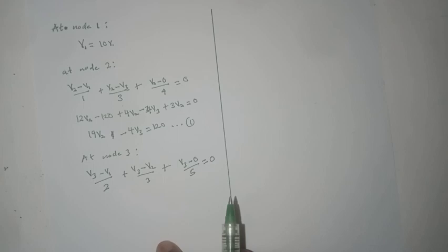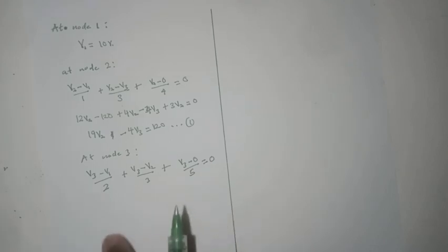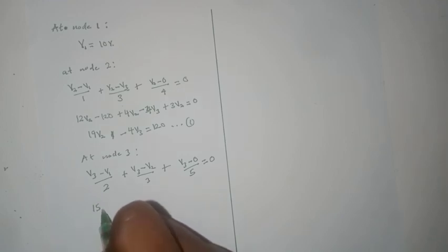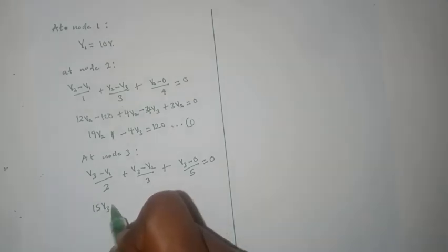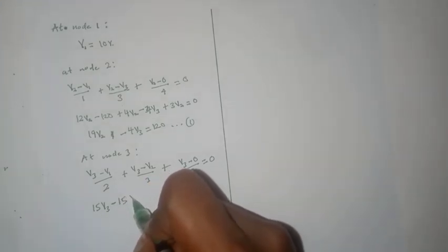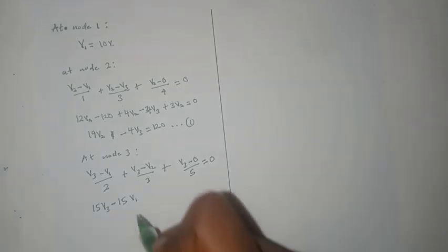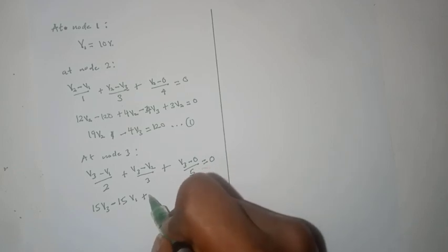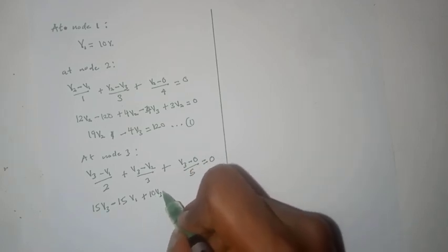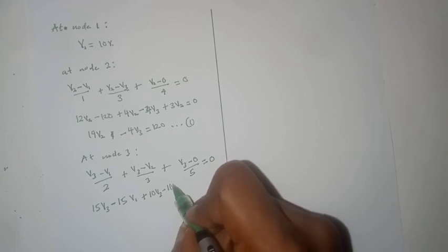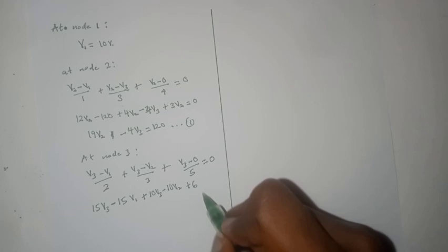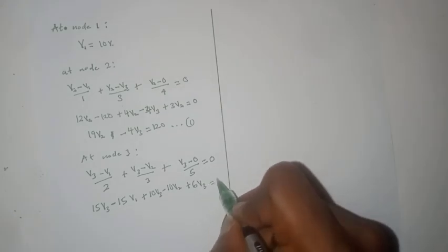So we can multiply through by 30, then we get 15V3 minus 15V1 plus 10V3 minus 10V2 plus 6V3 equals 0.